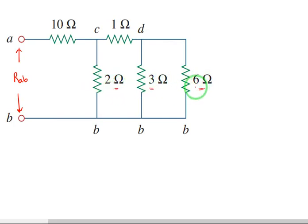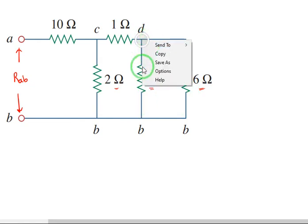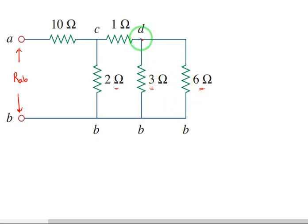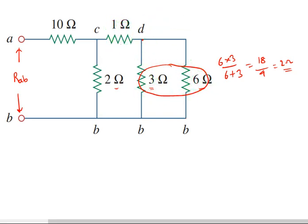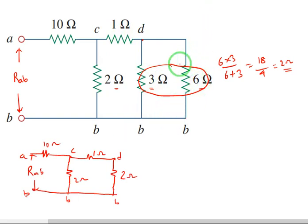If you simplify and write the equivalent circuit, after simplification you get two ohms, three ohms, and six ohms. From this equivalent circuit, three ohms and six ohms are connected in parallel between nodes D and B. The resultant is six into three divided by six plus three, that is eighteen by nine, equals two ohms. This resultant two ohms is then in series with the one ohm resistor.